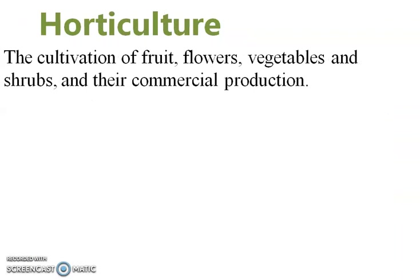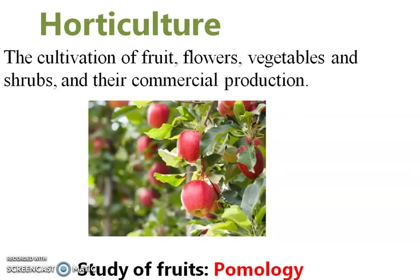Then the next subject is Horticulture, which is an important subject in agriculture — there are even separate horticulture colleges. Horticulture is the art of cultivation of fruits, flowers, vegetables, and shrubs, and their commercial production. It has different branches. For example, the study of fruits is called Pomology. Under Pomology, you study fruit classification, different types of fruits, their scientific names, and cultivation practices.